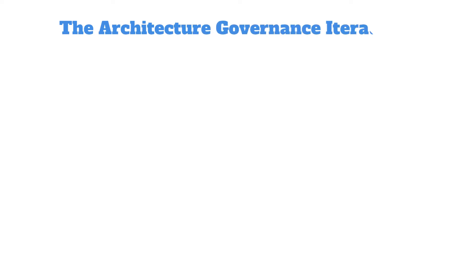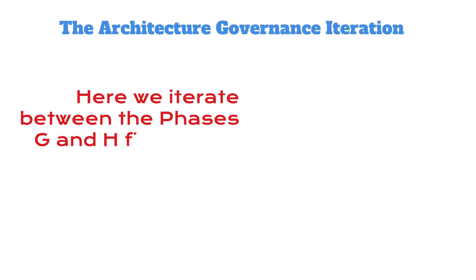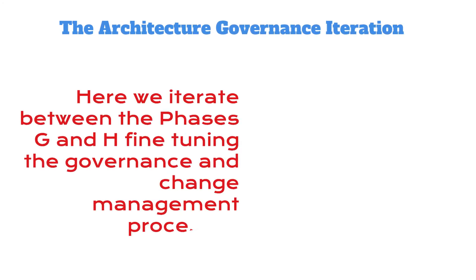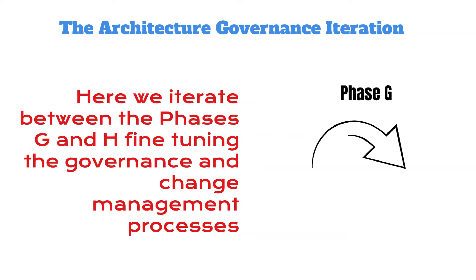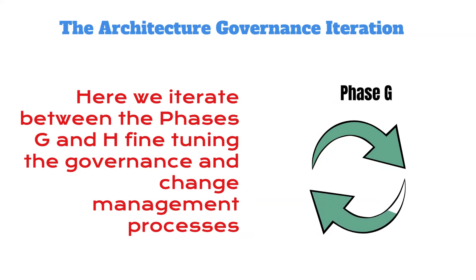The architecture governance iteration: as we go into the live environment, we begin to fine tune the governance and change management processes that are necessary to go live in phases G and H.